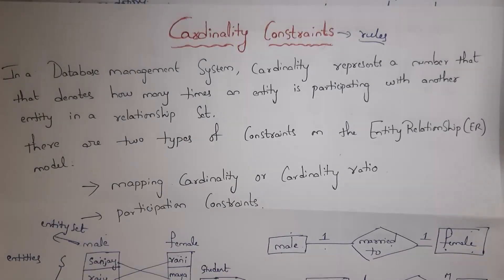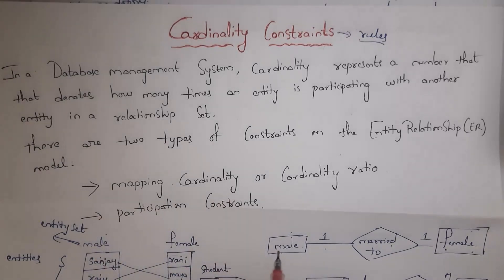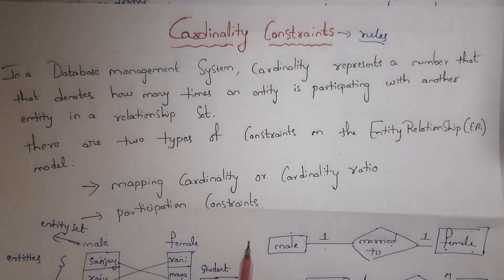So cardinality constraints are classified into two types: mapping cardinality — which contains one-to-one, one-to-many, many-to-one and many-to-many relationships — and participation constraints, which contain total participation and partial participation.